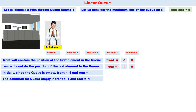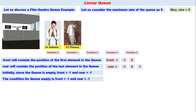Another great personality comes to the queue. Before he comes, we increment rear, so rear becomes one. That person is NT Ramrao Garu, superstar of the Telugu film industry. Now Dr. Rajkumar is the first person in the queue and NT Ramrao Garu is the last person. Therefore, front equals zero and rear equals one.